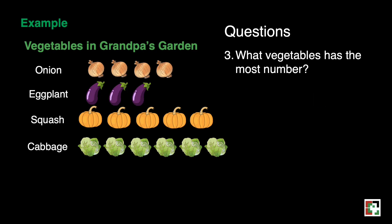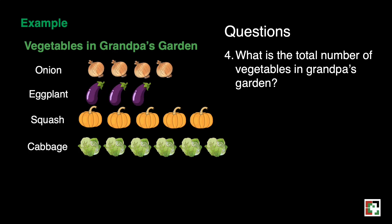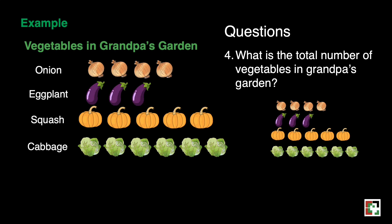For question three, what vegetable has the most number? Based on our table, there are four onions, three eggplants, five squash, and six cabbages, so the most are the cabbages. For question four, the total number of vegetables: four onions plus three eggplants plus five squash plus six cabbages, we add them all and get 18 vegetables.